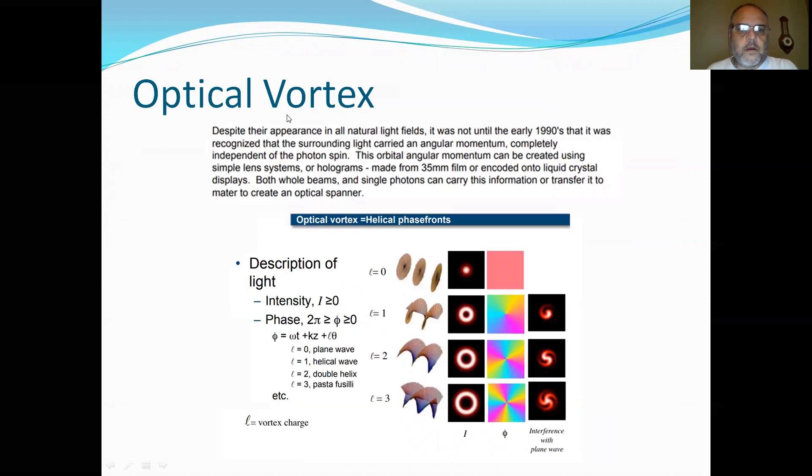What is optical vortex? Despite their appearance in all natural light fields, it was not until the early 90s that it was recognized that the surrounding light carried an angular momentum completely independent of the photon spin. This angular momentum can be created using simple lens systems or holograms.